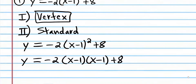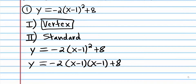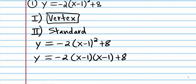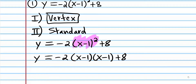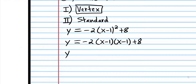Remember, when you raise something to the second power, that just means you're multiplying it by itself. So we're taking x minus 1 and multiplying it by itself. Be aware that this 2 is not part of that power expression — it's multiplied into the overall expression, but it's not part of the power expression. So now we need to multiply.